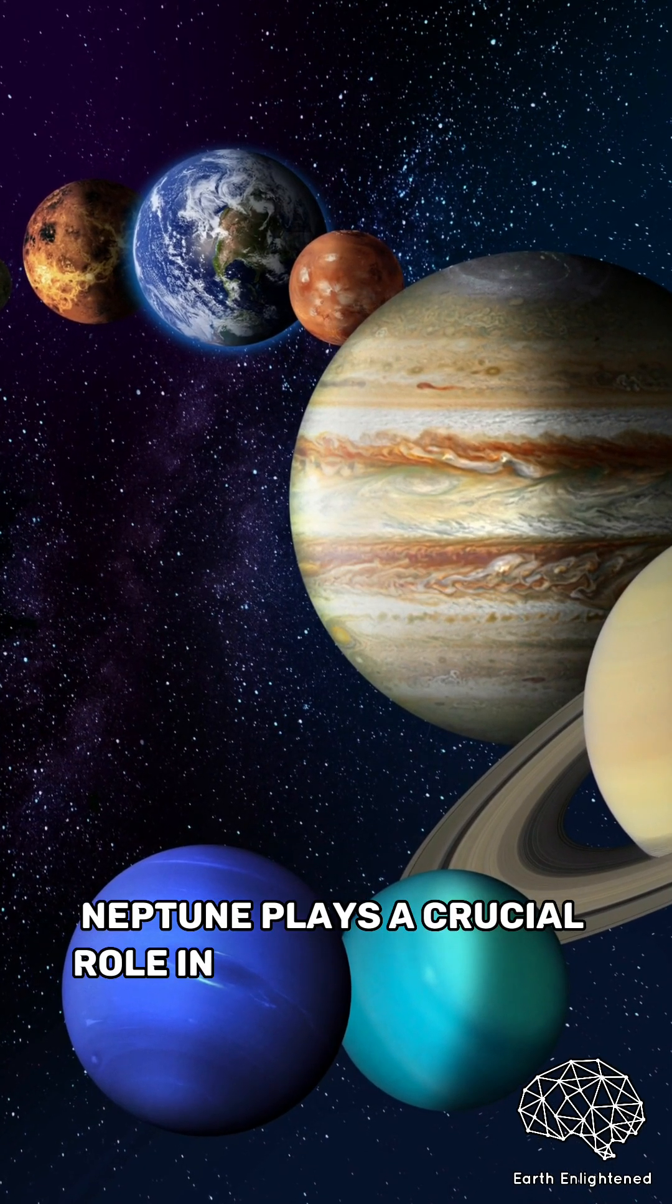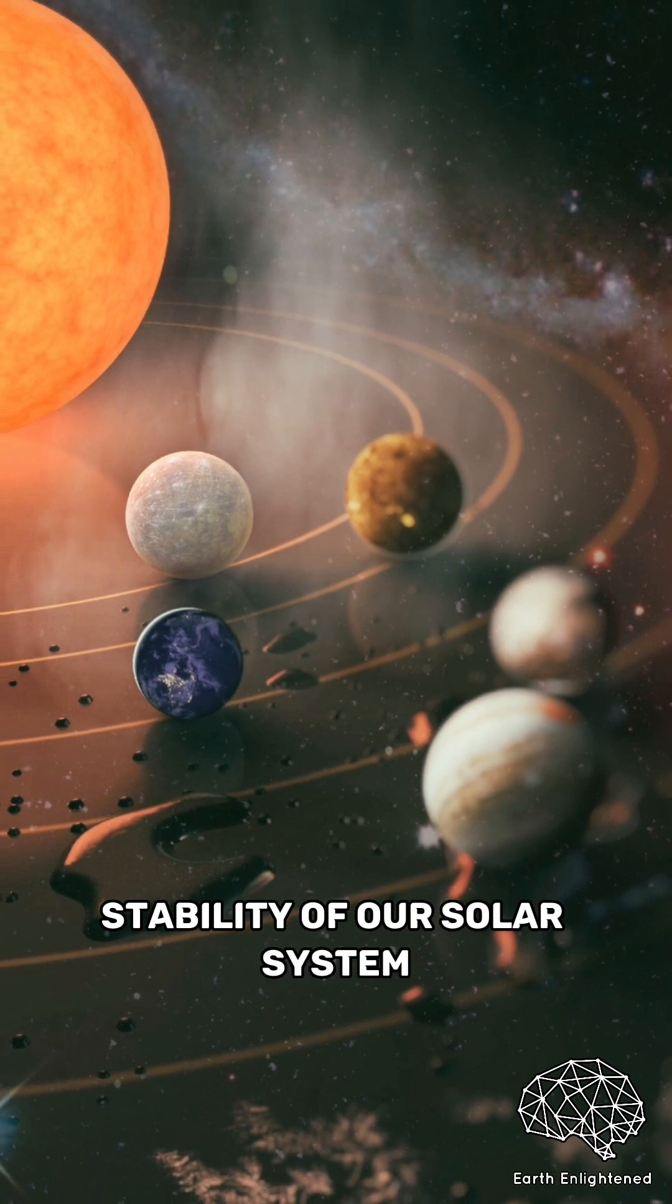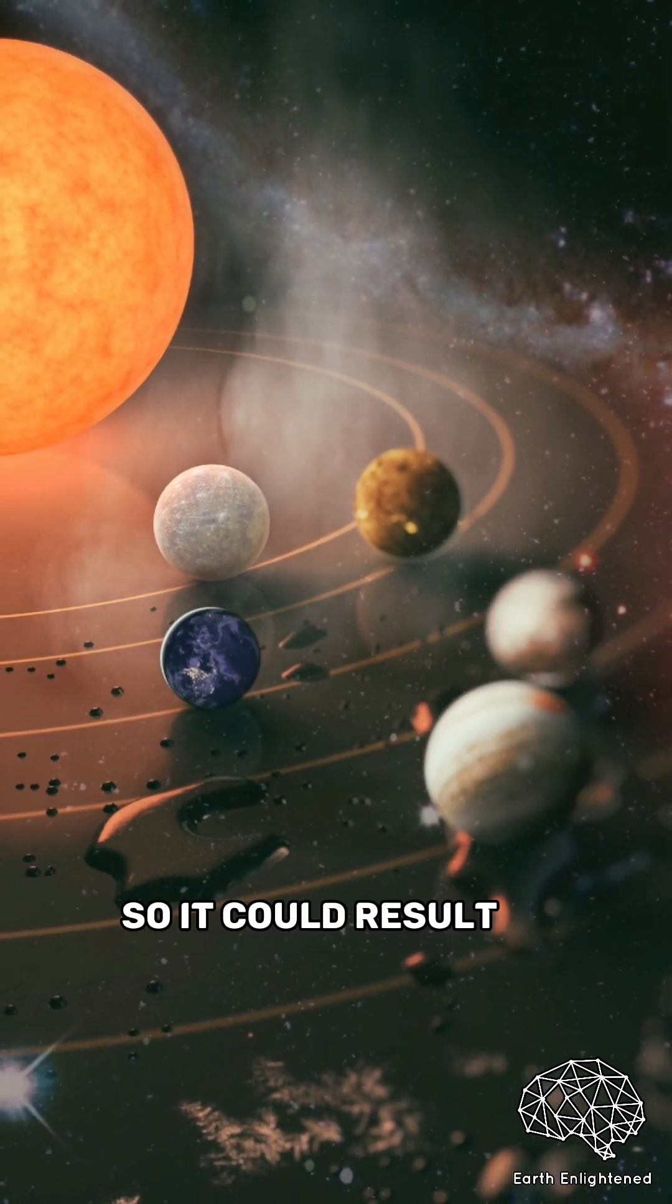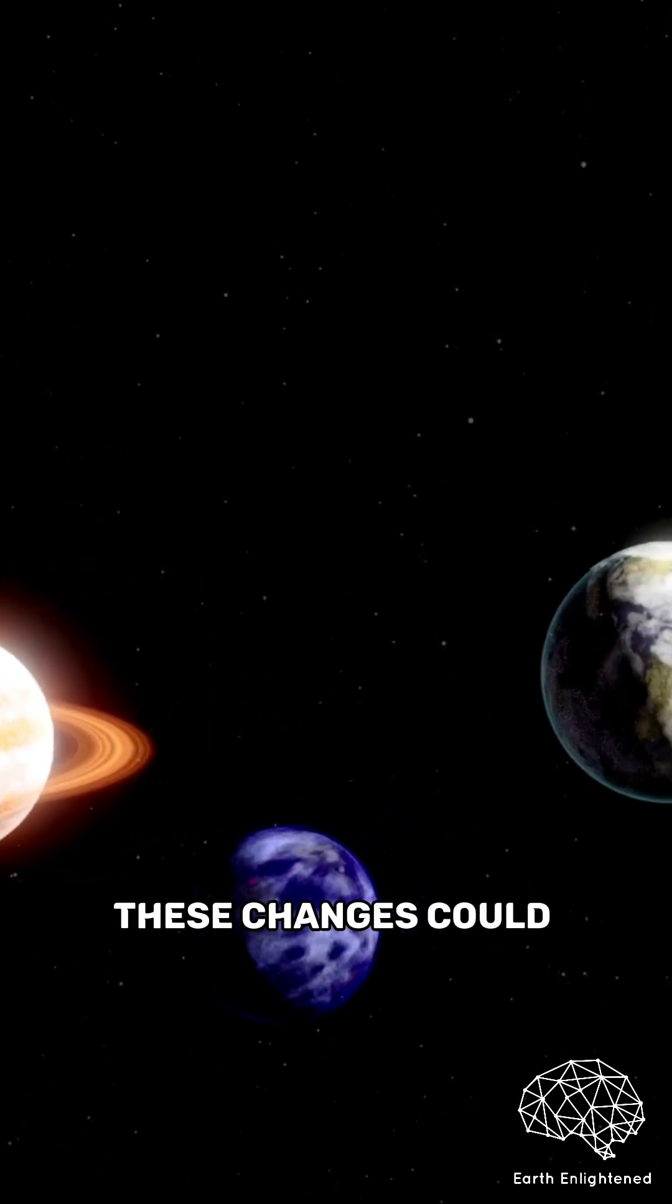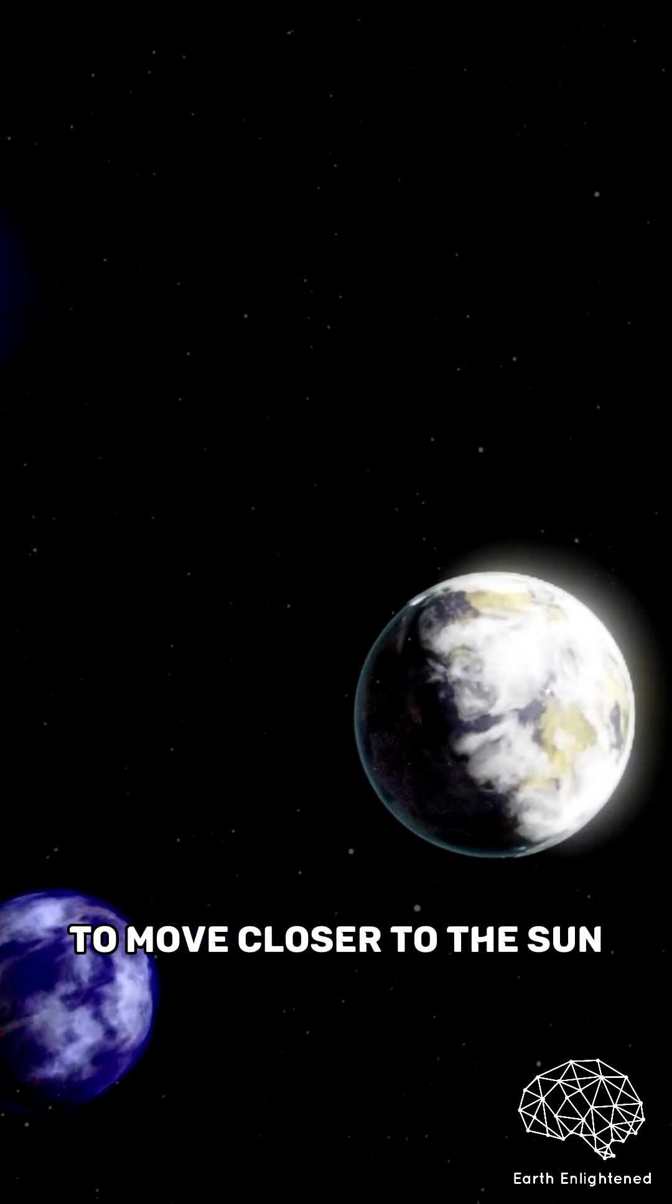Neptune plays a crucial role in the gravitational stability of our solar system. So it could result in changes in the orbits of other gas giants. These changes could cause some planets to move closer to the Sun or further away.